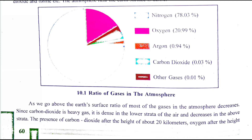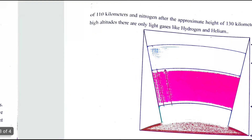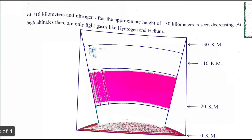Carbon dioxide is present up to a height of about 20 km. Oxygen can be found up to about 110 km from the ground. Nitrogen is present up to approximately 130 km. As we go higher, these gases decrease. At very high altitudes, only light gases like hydrogen and helium are found.